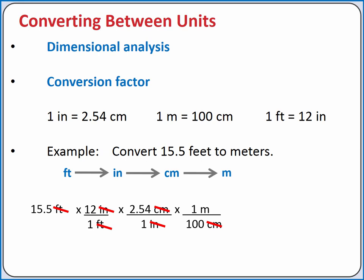If you wanted to put this into your calculator to get the answer, you would multiply everything on top in the numerators and divide by everything in the bottom in the denominators. So it would be 15.5 times 12 times 2.54 times 1, divided by — here you would use parentheses — 1 times 1 times 100.